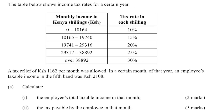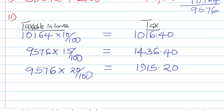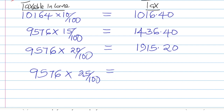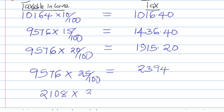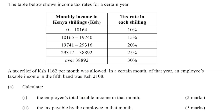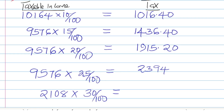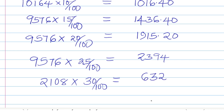The fourth band begins from 29,317 to 38,892. To get the amount taxed: 38,892 minus 29,316 = 9,576. The tax rate is 25%, and working that out gives 2,394. For the fifth band, the taxable income is already given as 2,108 at a rate of 30%, so 2,108 × 30% = 632.40.